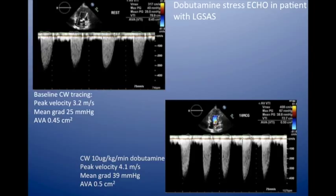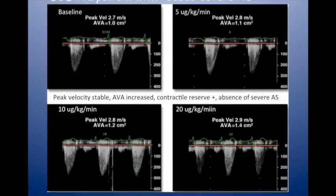On the other hand, in this case the gradient doesn't really change, but the area goes up. So when the ventricle starts to contract with dobutamine, the leaflets open, the gradient stays the same. This is pseudo-severe aortic stenosis — you can treat those patients medically.